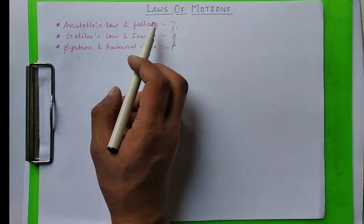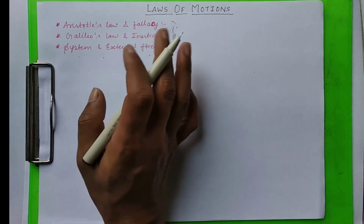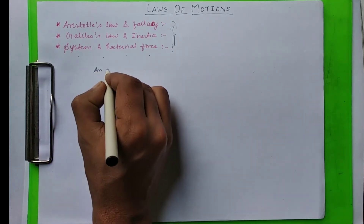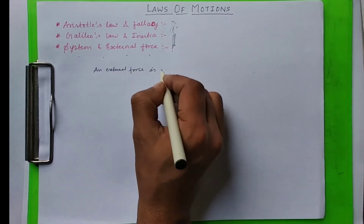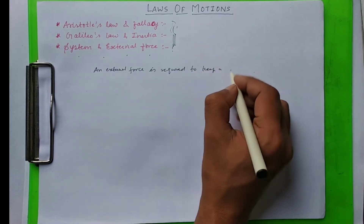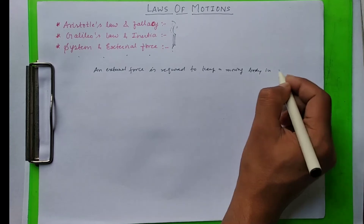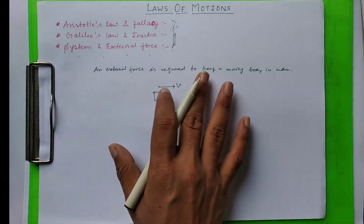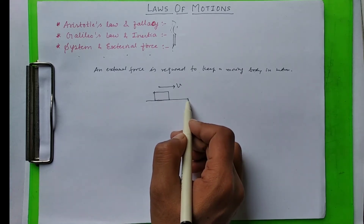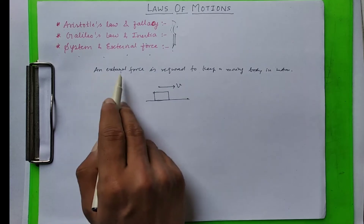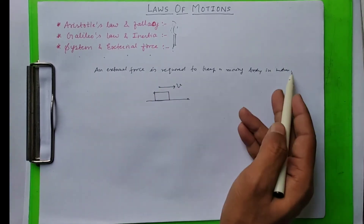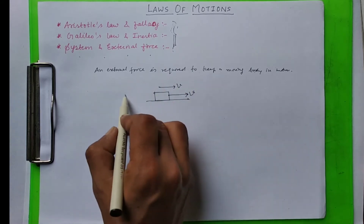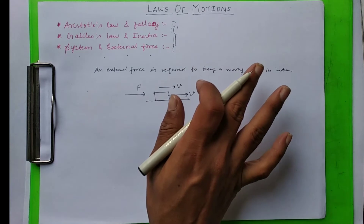First is Aristotle's Law and Fallacy. What was Aristotle's Law? Aristotle was a Greek philosopher. He had given a law that an external force is required to keep a moving body in motion. That means to keep a body moving with uniform velocity V, we have to apply an external force.